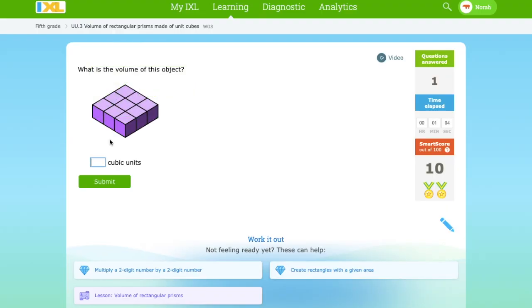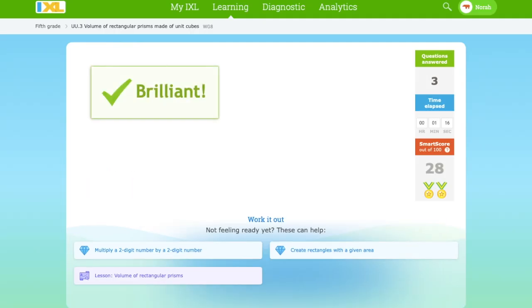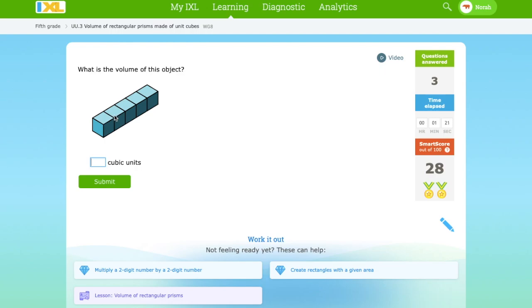You can try out one problem on your own. 3 times 3 is 9. 9 cubic units. 3 times 2 is 6. 1 times 5 is 5, so 5 cubic units.